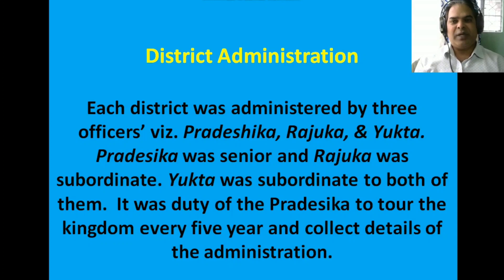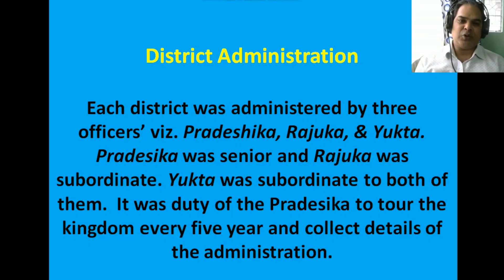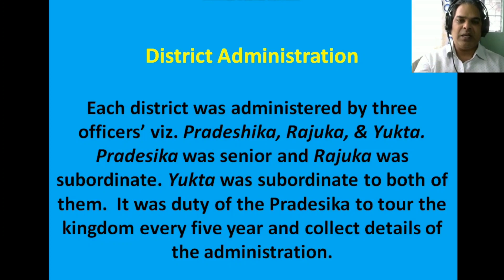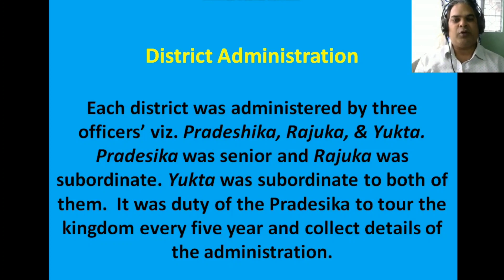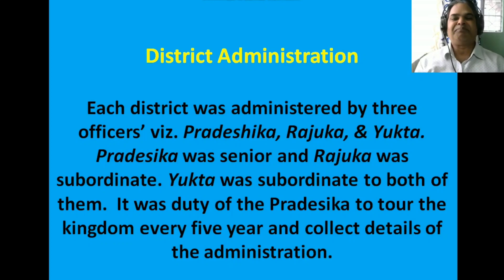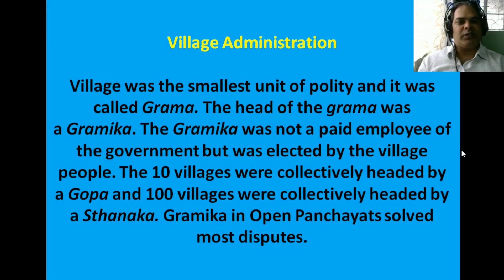In district administration, each district was administered by three officers: Pradyaksha, Rajuka, and Yukta. Pradyaksha was senior, Rajuka was subordinate to Pradyaksha, and Yukta was subordinate to both. It was the duty of the Pradyaksha to tour the kingdom every five years and collect details of the administration.